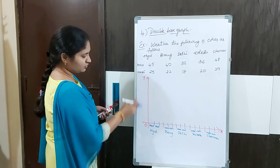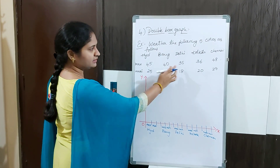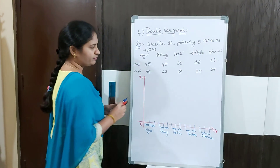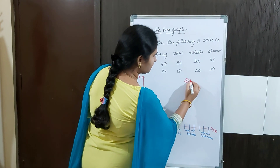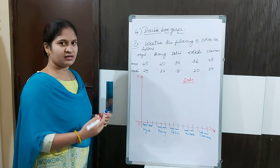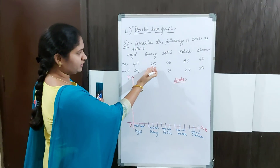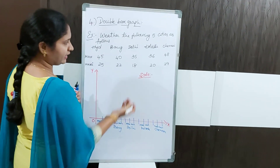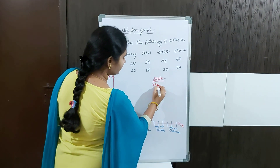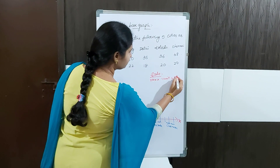On the vertical axis I am taking the temperatures. Here you have to choose the scale. How am I choosing the scale? It totally depends upon you children — the scale is an individual choice. Since we have values like 45, 25, 40, 22, 35, 18, I am taking the y-axis where 1 unit equals 5 degrees centigrade.